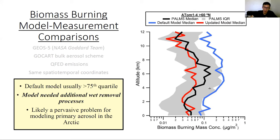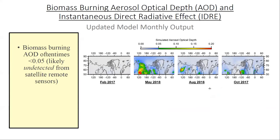Looking at other primary aerosol types and model types, this appears to be a pervasive problem for primary aerosol globally, and definitely in the arctic. When using chemical transport models or global circulation models, you need to be aware they might not be removing enough aerosol. We've seen this not only for biomass burning particles but also for black carbon.